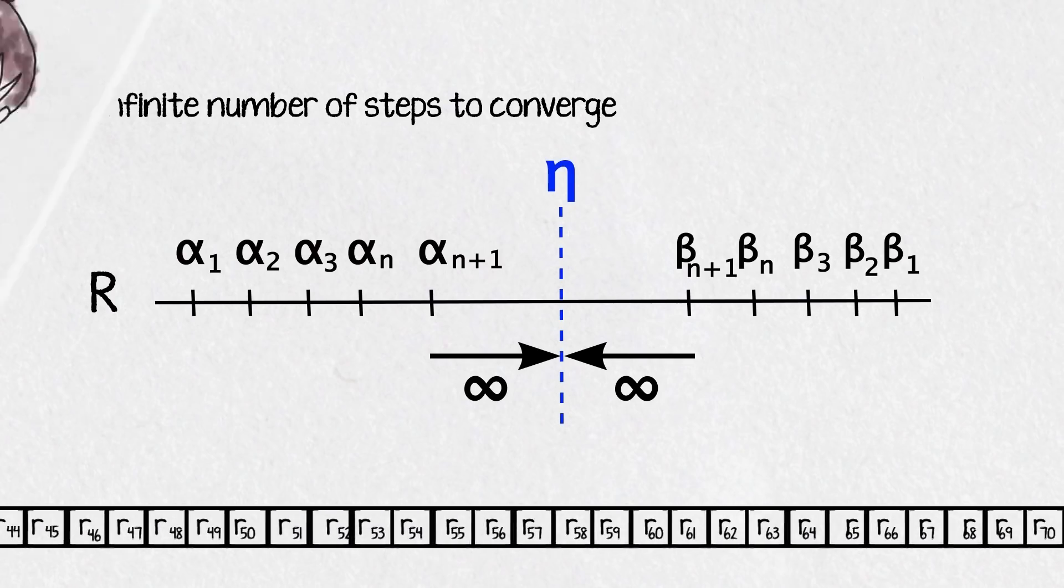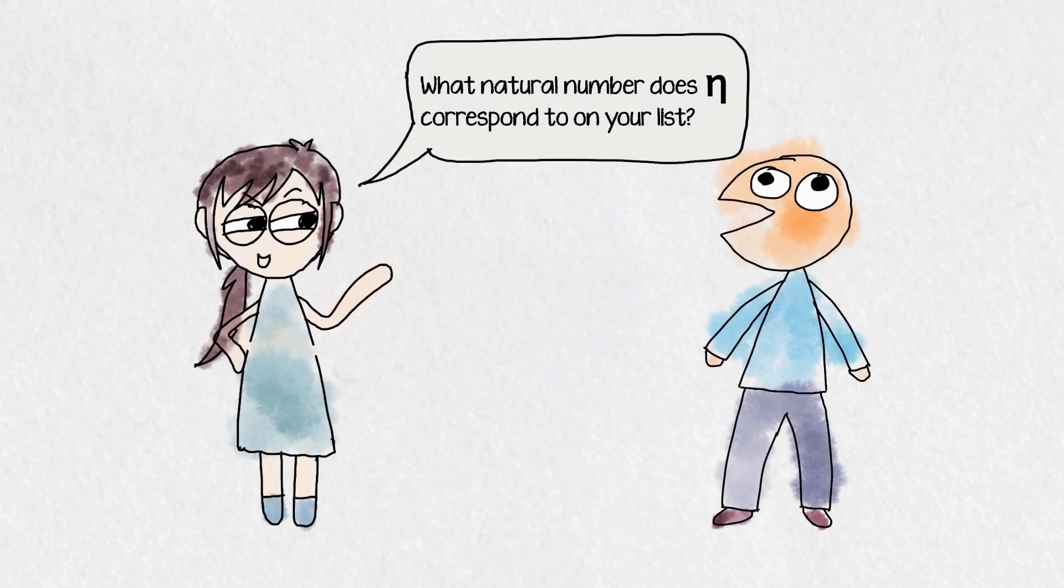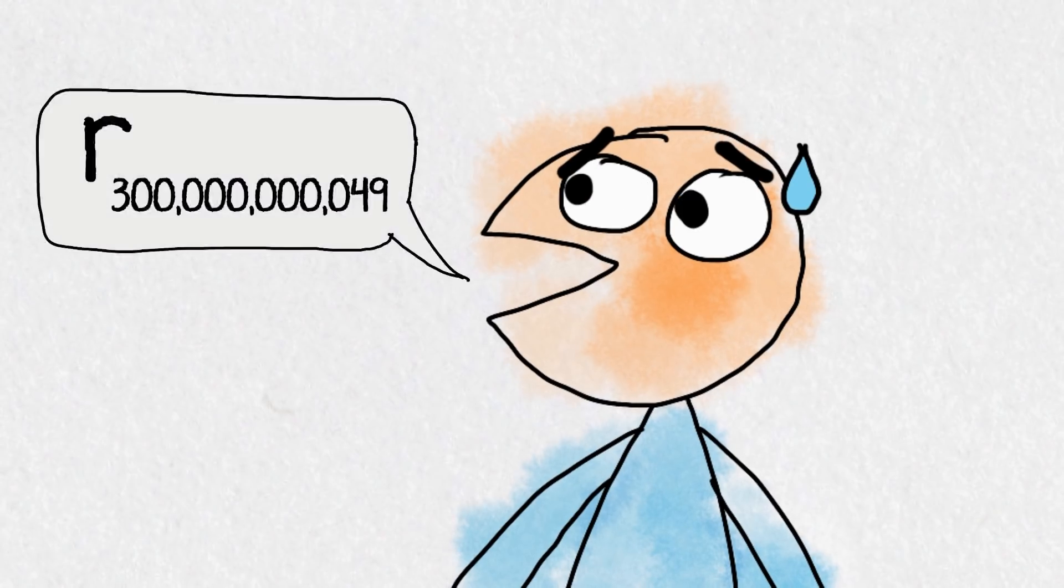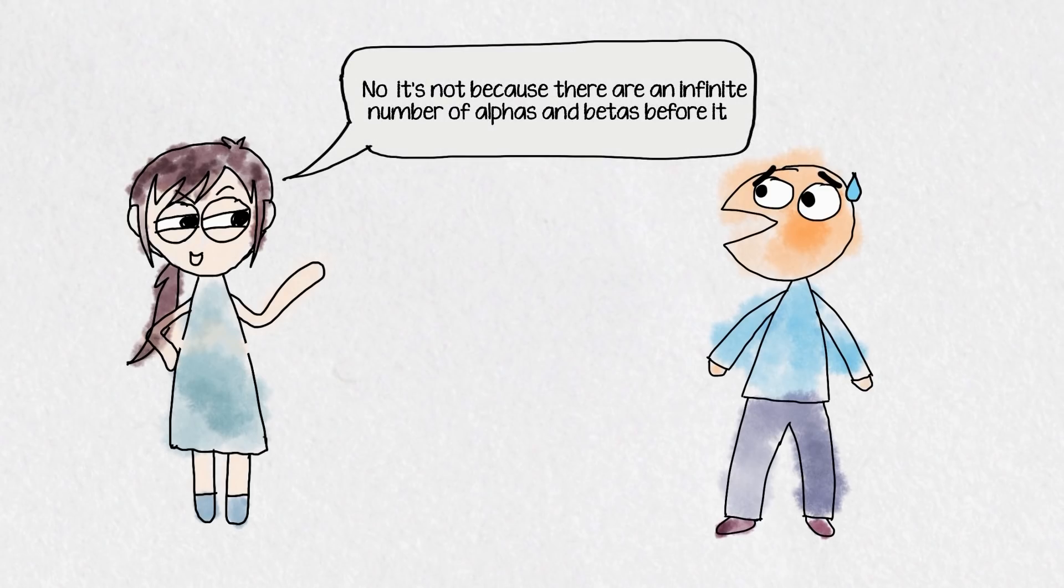To put it another way, say you ask your friend what natural number does eta correspond to on the list. What would he say? Infinity isn't an answer and if he gives any natural number like 300 billion and 49 you can say well no it's not because there are an infinite number of alphas and betas before it.